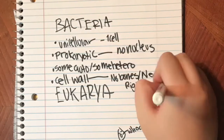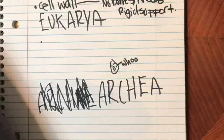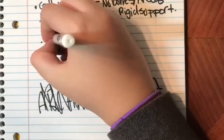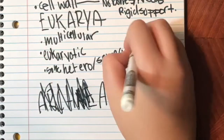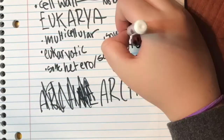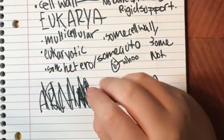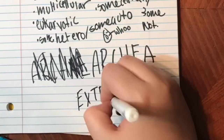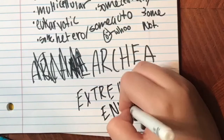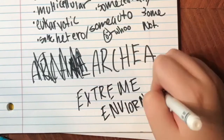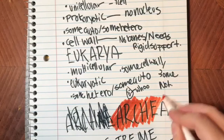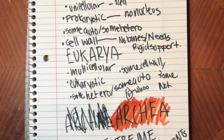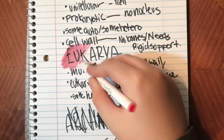A cell wall means they have no bones and need rigid support. Eukarya has multicellular, eukaryotic cells, with some heterotrophic, some autotrophic, some with a cell wall, and some without. Archaea is exactly the same as Bacteria, but they live in extreme environments. Let's make Bacteria blue, Archaea orange, and Eukarya pink.